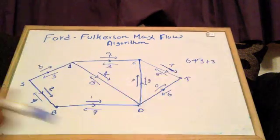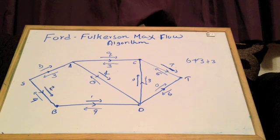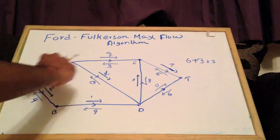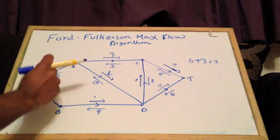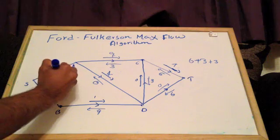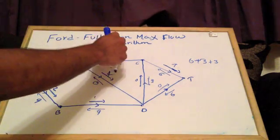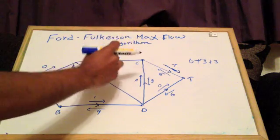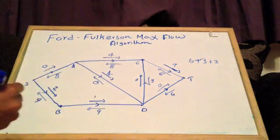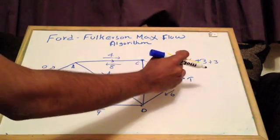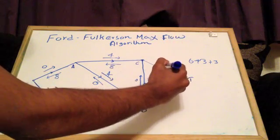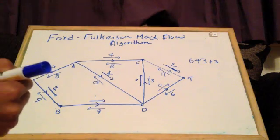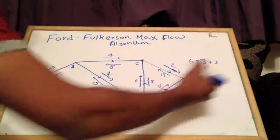The flow along that path adds 3 more, so the cumulative flow is 6 plus 3 plus 3. Looking back at the graph, we can still send 5 along S to A, 9 along that arc, and 7 along that arc. We send 5 through, so the capacity on that arc becomes 0. We add 5 through the remaining arcs, updating capacities accordingly. We add 5 to the flow of the network, bringing the total to 6 plus 3 plus 3 plus 5.